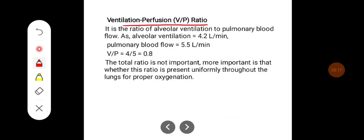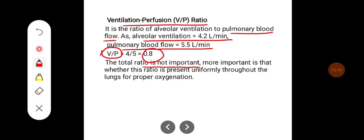Ventilation-perfusion ratio is the ratio of alveolar ventilation to pulmonary blood flow. Alveolar ventilation is 4.2 liters per minute and pulmonary blood flow is around 5.5 liters per minute, so the ventilation-perfusion ratio is approximately 4 divided by 5, which equals 0.8. The total ratio is not important; more important is whether this ratio is present uniformly throughout the lungs for proper oxygenation.